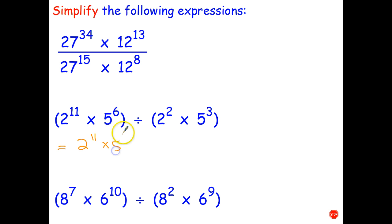So here we have two to the eleventh times five to the sixth. All of that, brackets mean all of that, divided by all of two squared times five cubed. So first thing I did is I wrote the division as a fraction. Now once again these are all factors. I've got eleven factors of two, six factors of five. Here I have two factors of two and three factors of five.